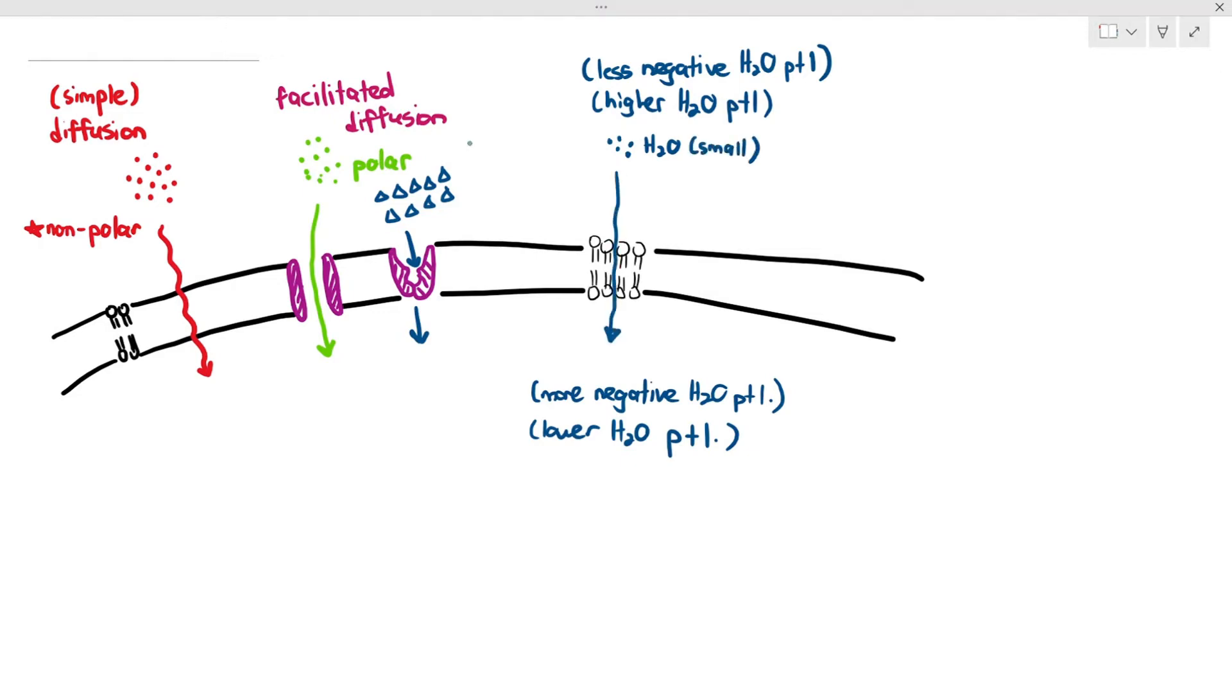Water can directly move through the phospholipid bilayer. It is small and has a weak polarity, but to make it easier for water to diffuse through by osmosis into or out of the cell, they can also use a channel protein called an aquaporin. I'm just going to put it over there as a label.